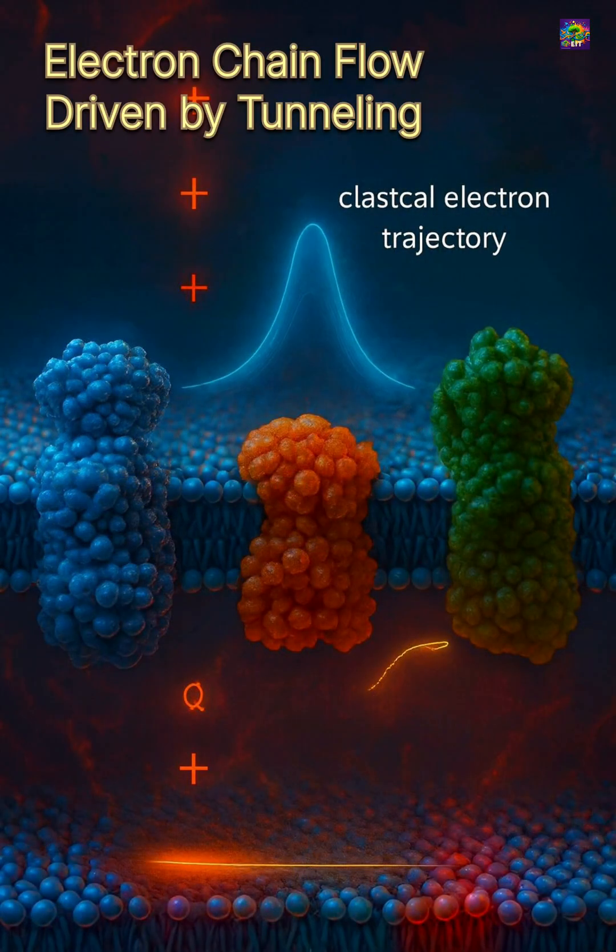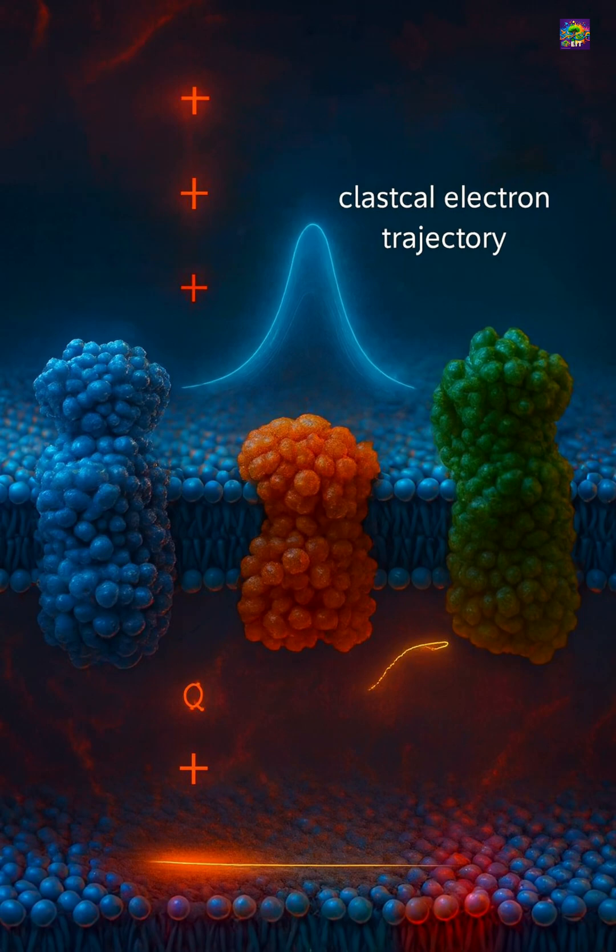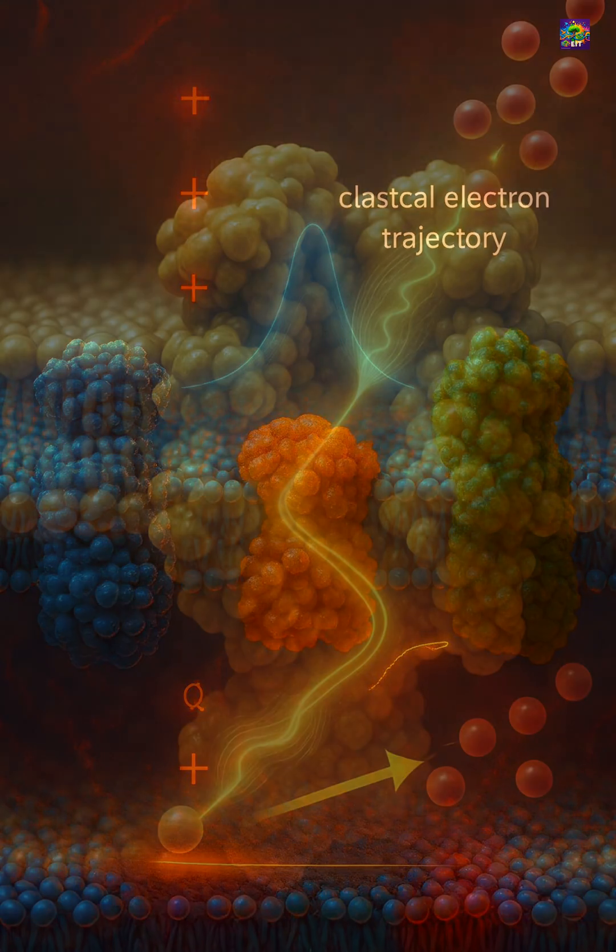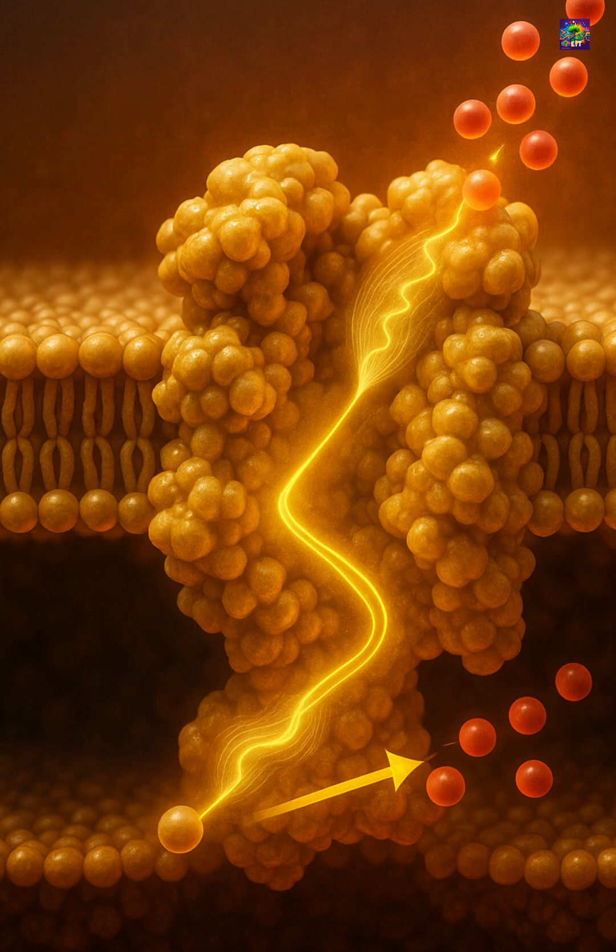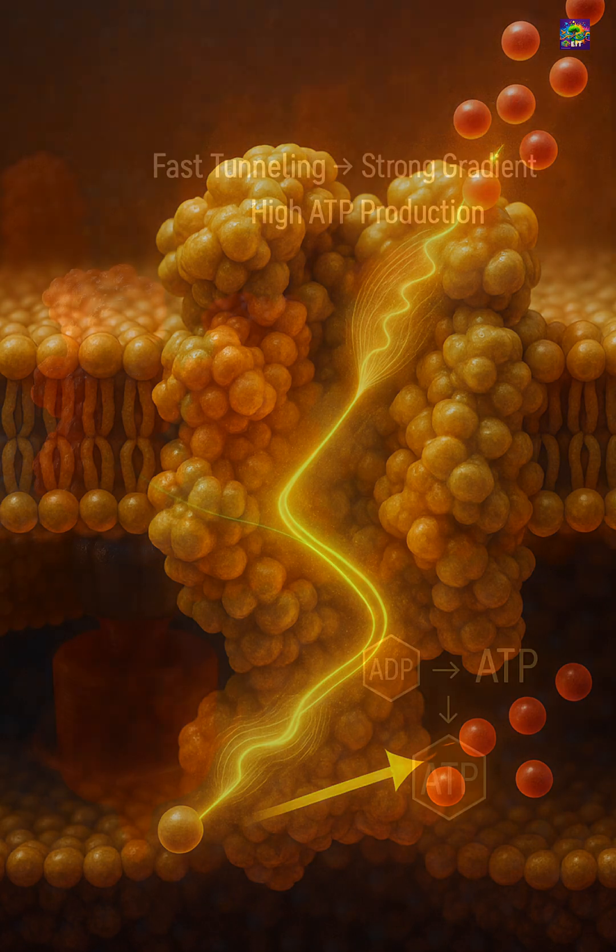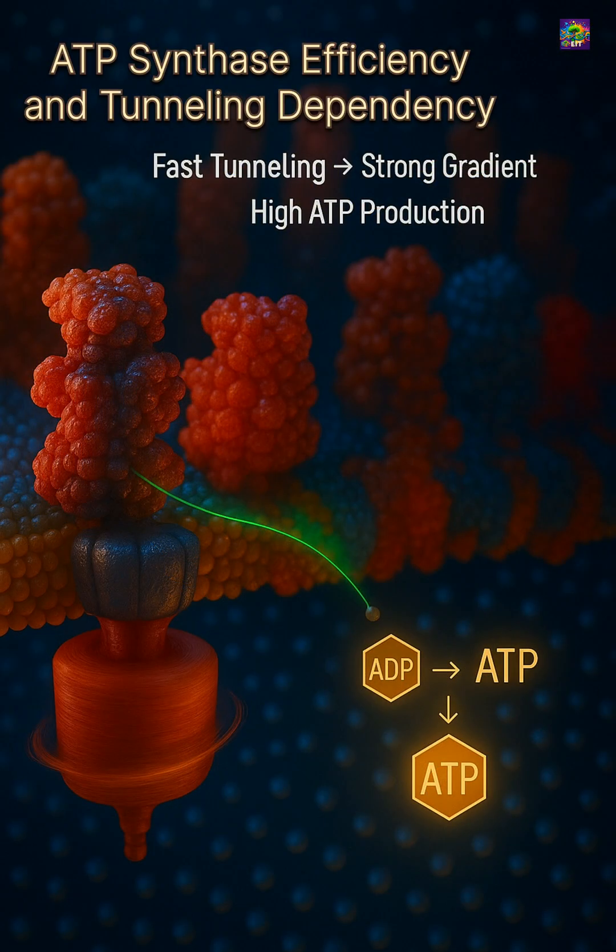This helps electrons move quickly along the chain, allowing mitochondria to pump protons and drive ATP synthase efficiently. Without tunneling, this flow would slow down, and the cell would not be able to produce energy at the level complex organisms require.